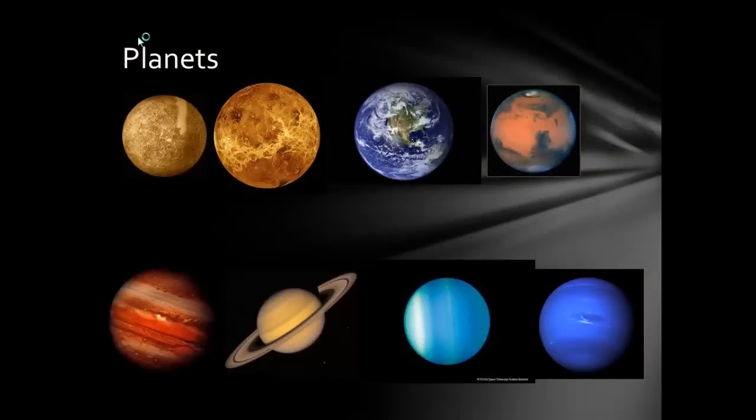So this is the first of three videos that we're going to go through the different things inside of the solar system. This one we're going to look at the first four planets.